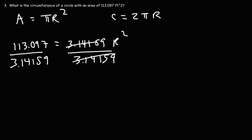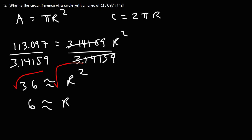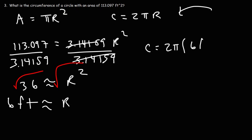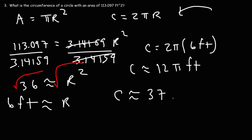113.097 divided by 3.14159 equals 35.9999, which is basically about 36. Taking the square root of both sides, the square root of 36 is 6, so the radius is approximately 6 feet. Plugging that in: C is 2 pi times 6 feet, so the circumference is approximately 12 pi feet. Multiplying 12 by 3.14159, the circumference is approximately 37.7 feet.